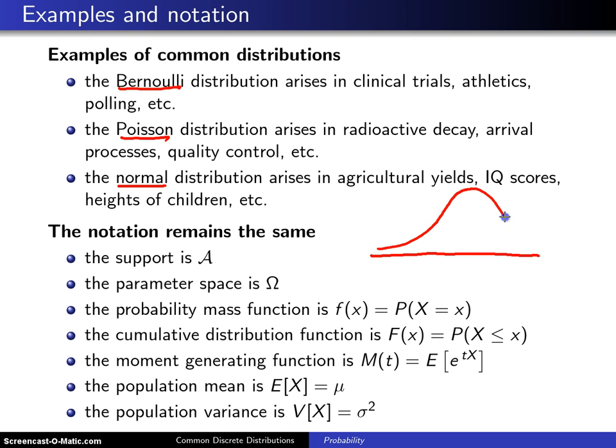The normal or the bell-shaped distribution might arise in agricultural yields. It might show up in IQ scores, which are typically centered about 100, heights of children, etc.